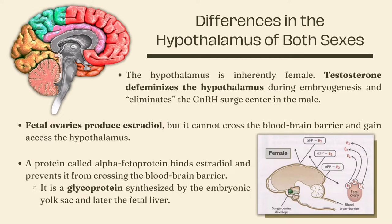For testosterone to defeminize the hypothalamus, it must first be converted to estradiol. Fetal ovaries produce estradiol, and there is a frequently asked question: why does the female hypothalamus not become defeminized? The answer is that fetal estradiol in the female cannot cross the blood-brain barrier and access the hypothalamus. Alpha-fetoprotein binds estradiol and prevents it from crossing the blood-brain barrier. Therefore, estradiol cannot affect the hypothalamus.